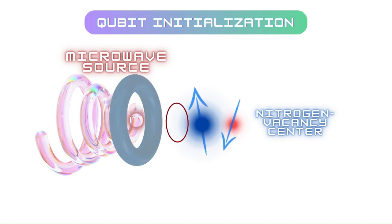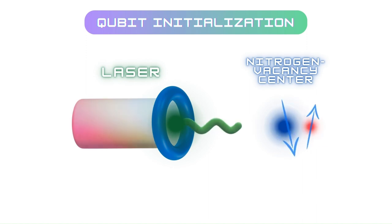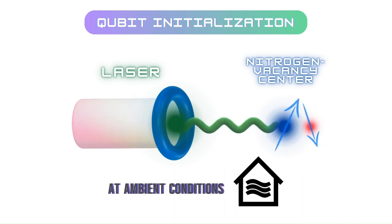The spin states of nitrogen vacancy centers can be initialized, manipulated and read out using laser light, microwave radiation and fluorescence detection. The optical method readily enables the readout and initialization of the electron spin of the diamond NV center at room temperature.